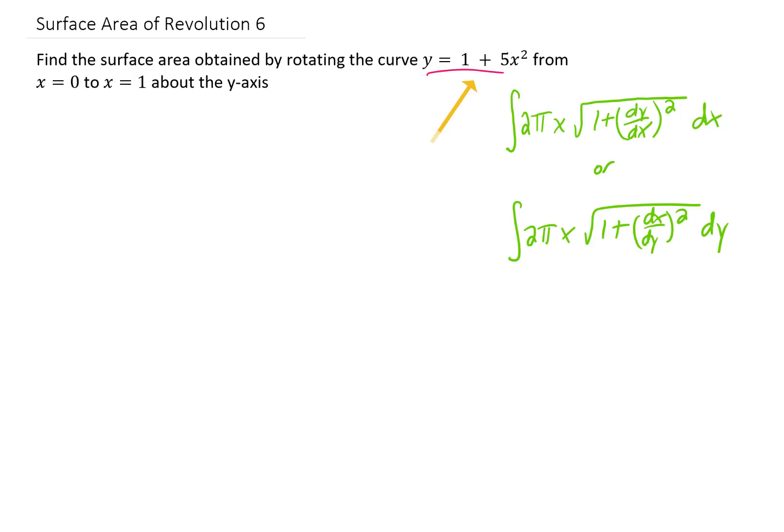We're given a function that we want to rotate about the y-axis and we want to find the surface area of that volume. The two possible formulas for surface areas of rotation about the y-axis are given right here, and since we are given a function of x, it probably makes sense to use this one.